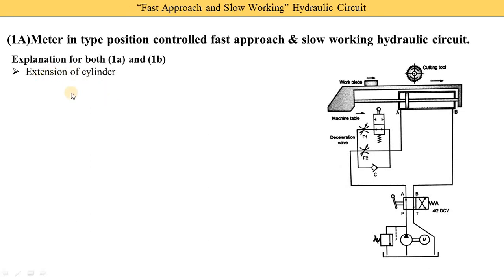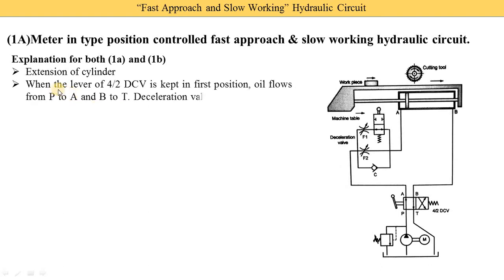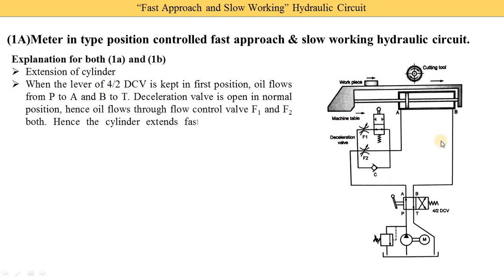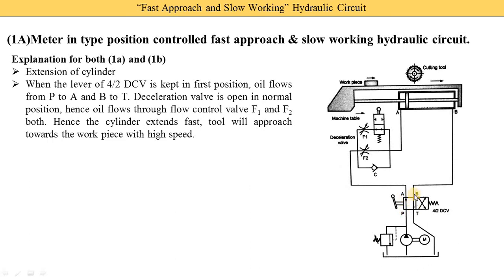Fast approach and slow working is generally for the extension of the cylinder. When the lever of the 4/2 DCV is kept in the first position, oil flows from P to A and B to T. The P-port is connected with the A-port with the arrow in the upward direction, and the B-port is connected with the T-port with the arrow in the downward direction. The deceleration valve is open in the normal position, so oil flows through flow control valves F1 and F2 both.